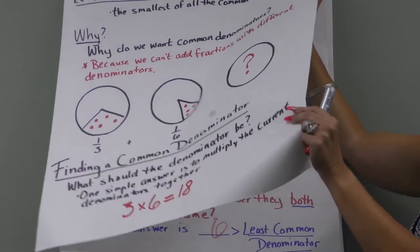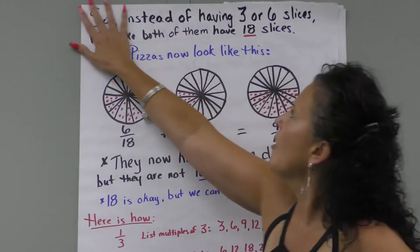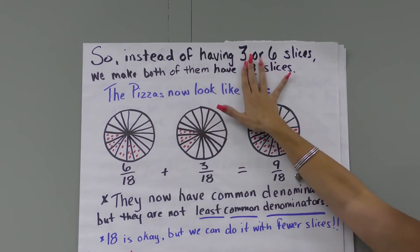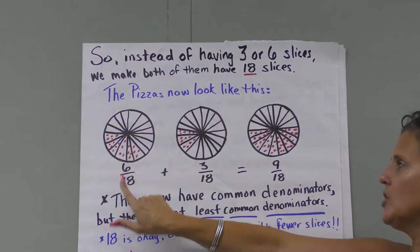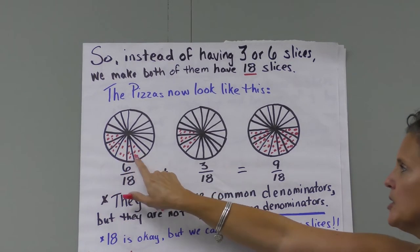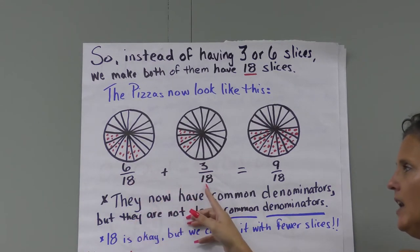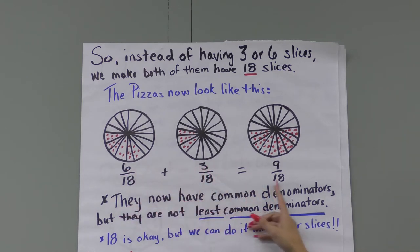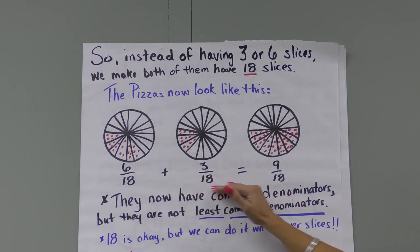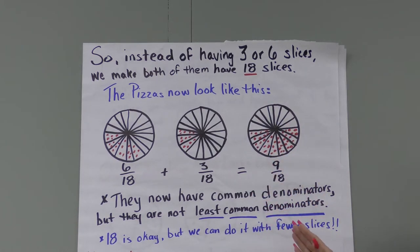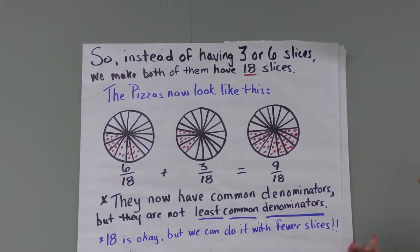We're going to use 18 on our pizzas. So instead of having three or six slices, both of our pizzas now have 18 slices. We can change this to six-eighteenths on this pizza and three-eighteenths on the other. Since we have 18 and 18 — a common denominator — we can add the numerators: six plus three equals nine, and we bring the 18 over. So our pizza has nine-eighteenths, but it isn't the least common denominator.